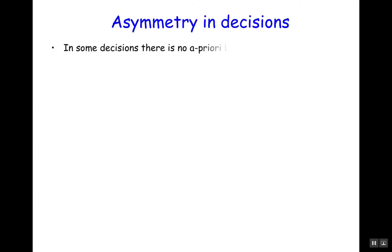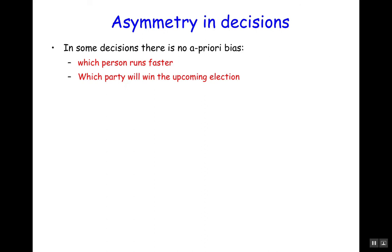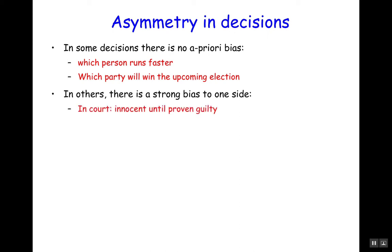Now notice that there is an asymmetry. In some decisions there is no a priori bias — if we ask which person runs faster, it can be Bill or Joe; if we ask which party will win the upcoming election, it can be the Democrats or the Republicans. But in court, a person on trial is innocent until proven guilty, so the default is innocence and only with enough evidence can you show guilt. In science, a theory holds until you show data inconsistent with it.